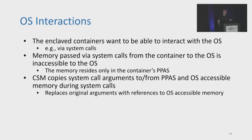Although we want to protect containers, we still want them to be able to interact with the OS and make use of OS services. However, memory references passed via system calls from the container to the OS are inaccessible to the OS since that memory only resides within the container's protected address space. To remedy this, as part of the CSM interposing on system call exceptions, the CSM copies system call arguments to and from the protected address space and OS-accessible memory, then updates the system call arguments with references to these new OS-accessible locations before giving control to the OS. Prior to returning control to the container, any data being returned by the system call is copied from the OS-accessible memory back into the protected physical address space.